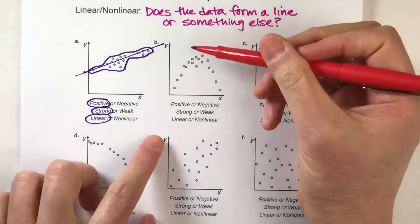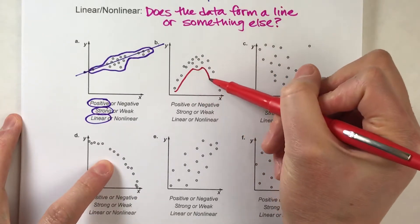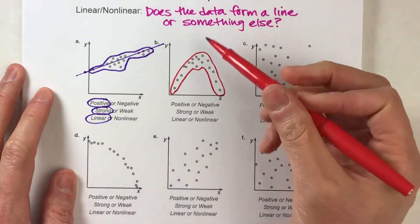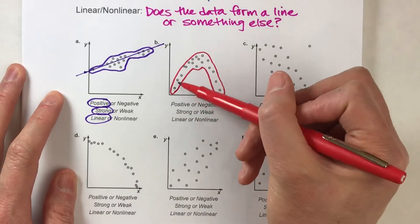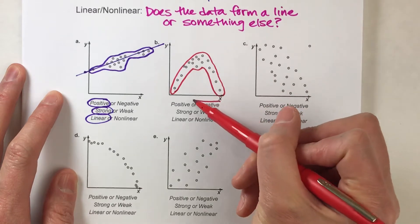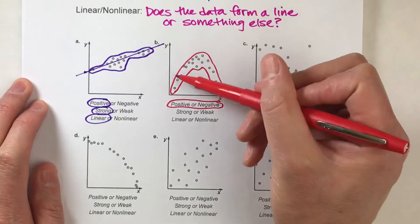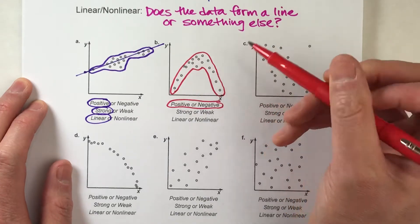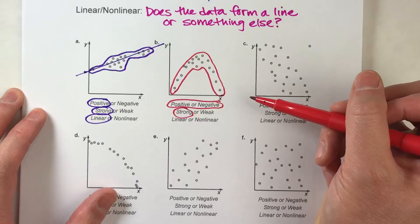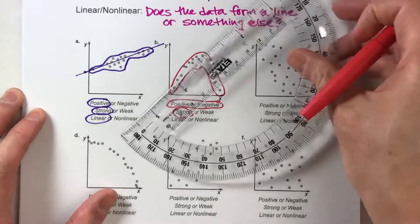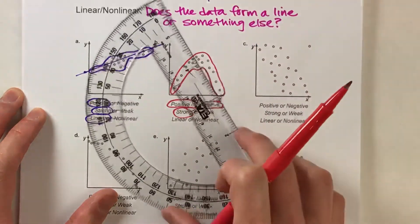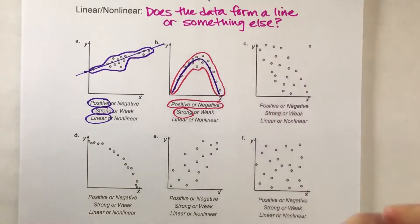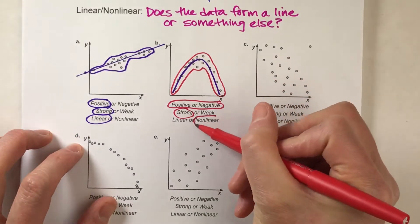Now the next example is nothing like the last one. It kind of looks like a rainbow — it goes up, then it goes back down. Because it goes up and then down, it's kind of both positive and negative. It pretty closely follows that pattern, so that's a pretty strong association. And for linear or nonlinear — pretty clearly you can see it doesn't fall in a line. It's closer to a U shape, so I would say that is definitely nonlinear.